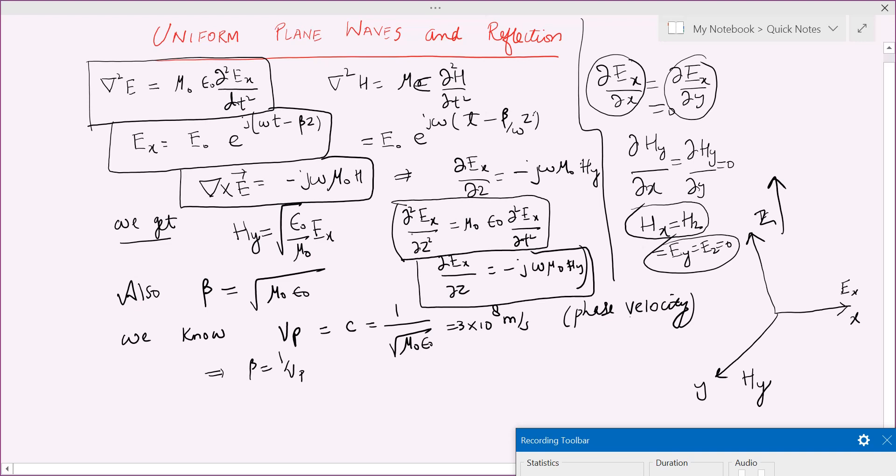By substituting E_x in this equation where we find the second derivative, and in this equation where we relate E_x with H_y, we will get that H_y is a constant root of epsilon by mu naught times E_x. So magnetic field in y direction is related to the electric field in x direction.